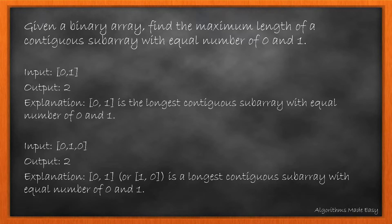So we output the length of the array, which is 2. For example 2, either the array 0, 1 or the array 1, 0 can be considered as having equal number of 0s and 1s. The max length of these is 2, hence the program returns 2.